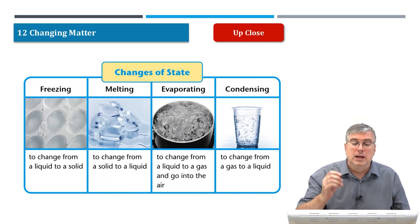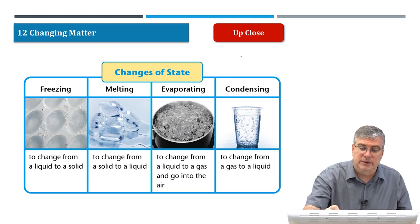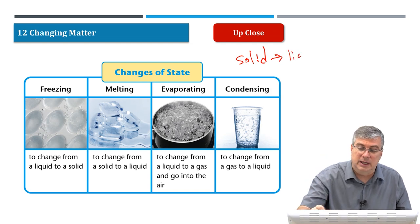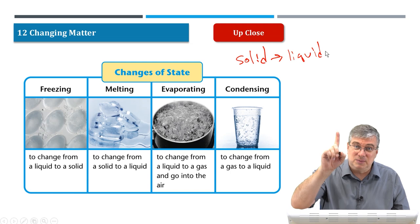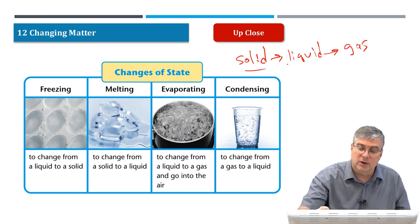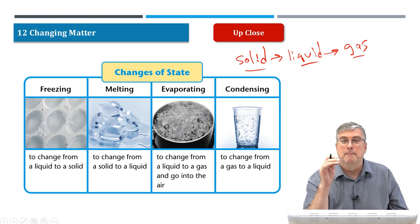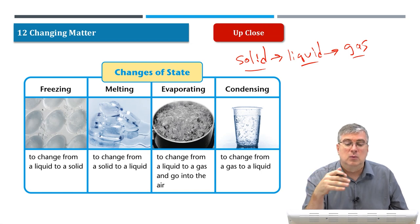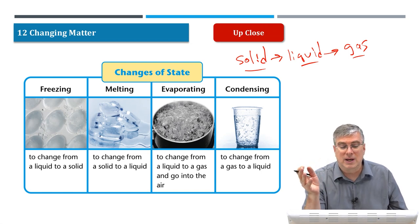Matter can have three main forms. First we have solid, then as the temperature increases it becomes a liquid, and then as the temperature keeps going up it becomes a gas. So these are our three main states of matter, and changes of state will occur. We talked about some of these already.